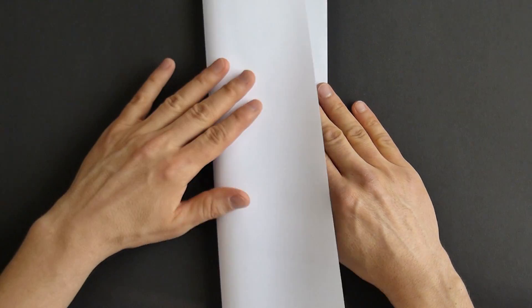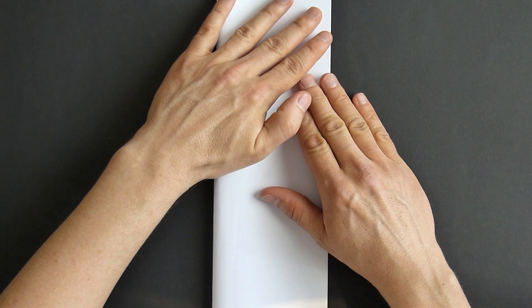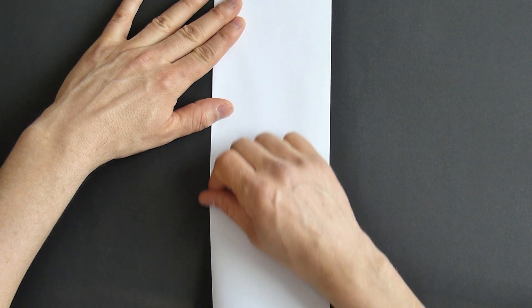You start by folding the paper in the middle as precisely as you can. Make sure the corners meet nicely. You can use your fingers for the crease.